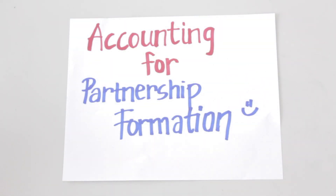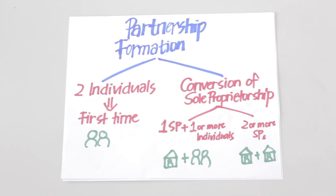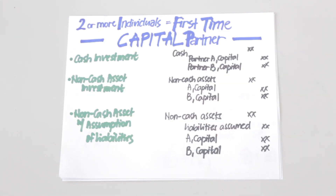Today we're going to be talking about accounting for partnership formation. There are two ways in which a partnership can be formed: one would be when two or more individuals form a business for the first time, and the second would be when a sole proprietorship is converted into a partnership. We will be discussing the opening entries for each of these scenarios.